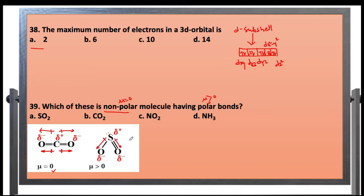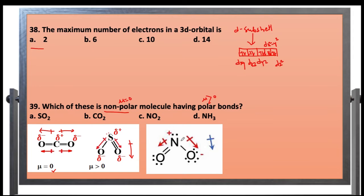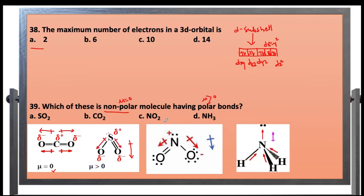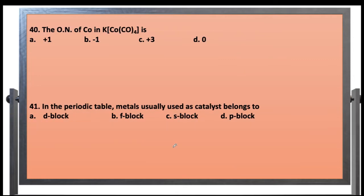For a bent molecule, the resultant dipole moment acts in the same direction and is not cancelled, making it a polar molecule. For NO2, the lone pair of electron means the resultant dipole moment is not cancelled, so NO2 is a polar molecule. NH3 has a trigonal pyramidal shape and a resultant vector in the upward direction, so it is also polar. Carbon dioxide is the non-polar molecule with polar bonds. So option B, carbon dioxide, is the correct answer.